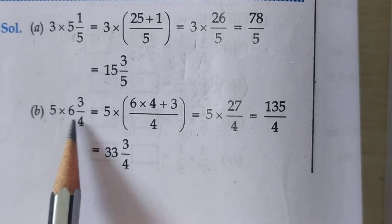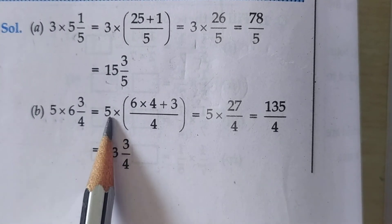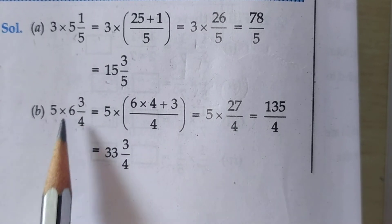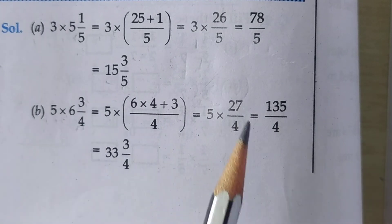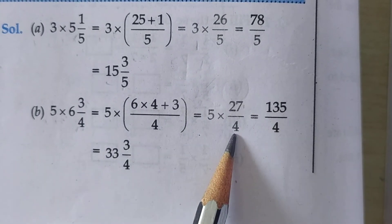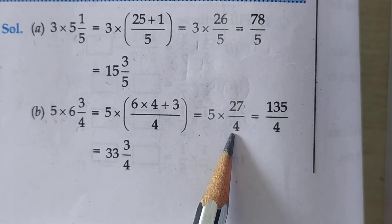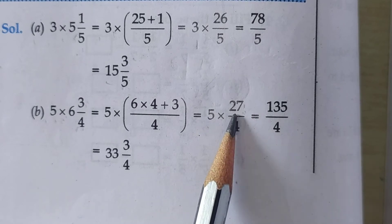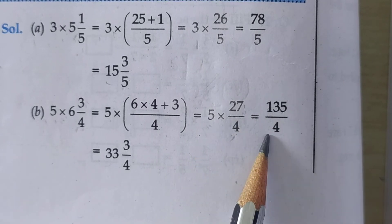Next, part (b): 5 multiplied by 6 whole 3 upon 4. Now students, write 5 as it is. Convert this mixed fraction into improper: 6 fours are 24, 24 plus 3 is 27 upon 4. Now students, 27 is not divisible by 4, so multiply the whole number and numerator.